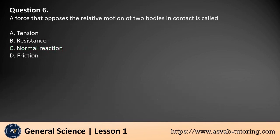Question 6. A force that opposes the relative motion of two bodies in contact is called: a. Tension. b. Resistance. c. Normal reaction. d. Friction.